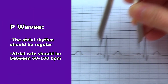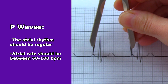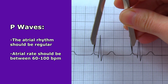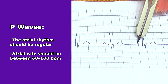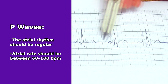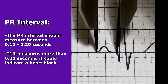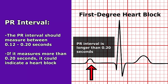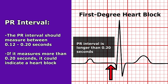The atrial rhythm for normal sinus rhythm should be regular, and the rate should be anywhere between 60 to 100 beats per minute. Also, when you look at the PR interval, it should measure between 0.12 to 0.20 seconds. If it measures greater than 0.20 seconds, you could be dealing with a heart block.